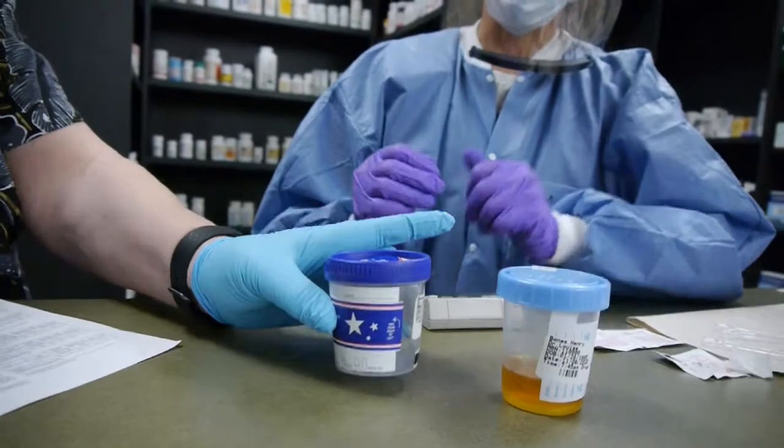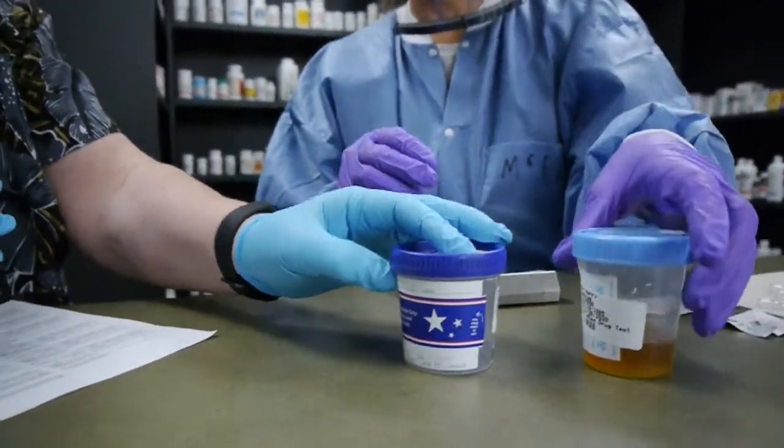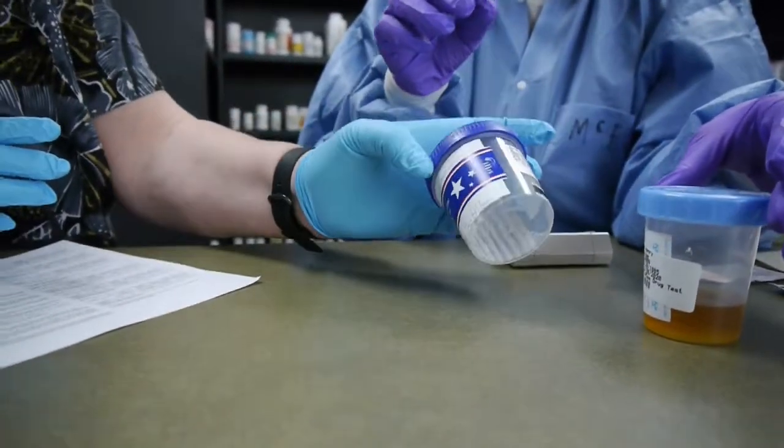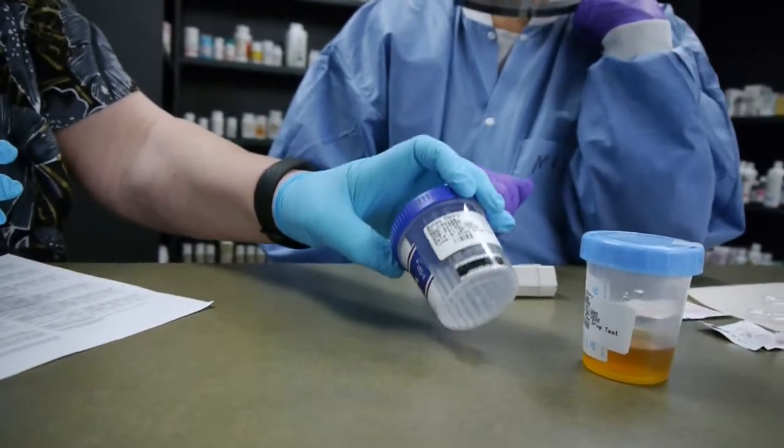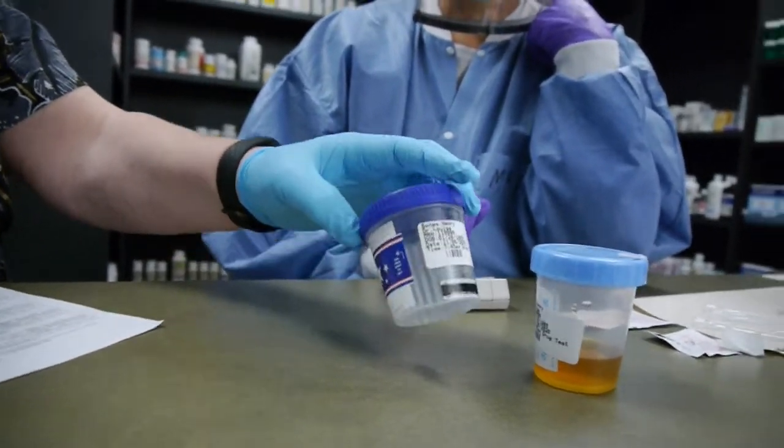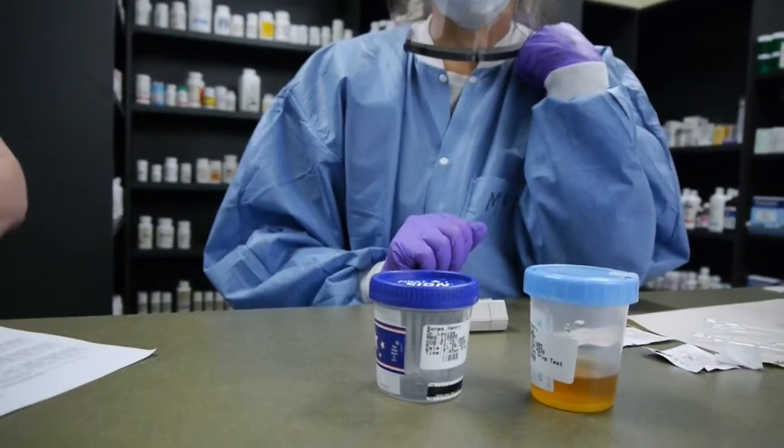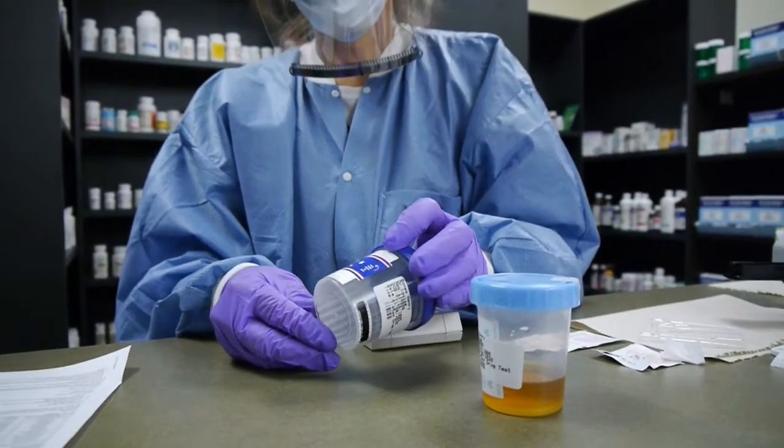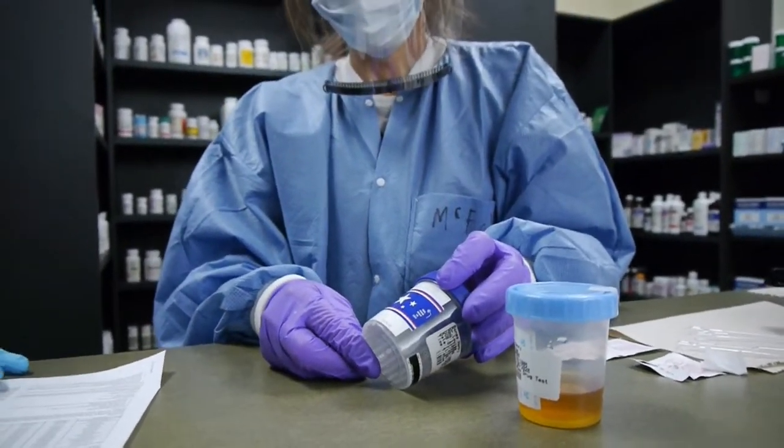You're going to take urine from the container and make sure that you're labeling your test kit appropriately. Always follow your standard operating procedure. It says that you need a minimum of 30ml.